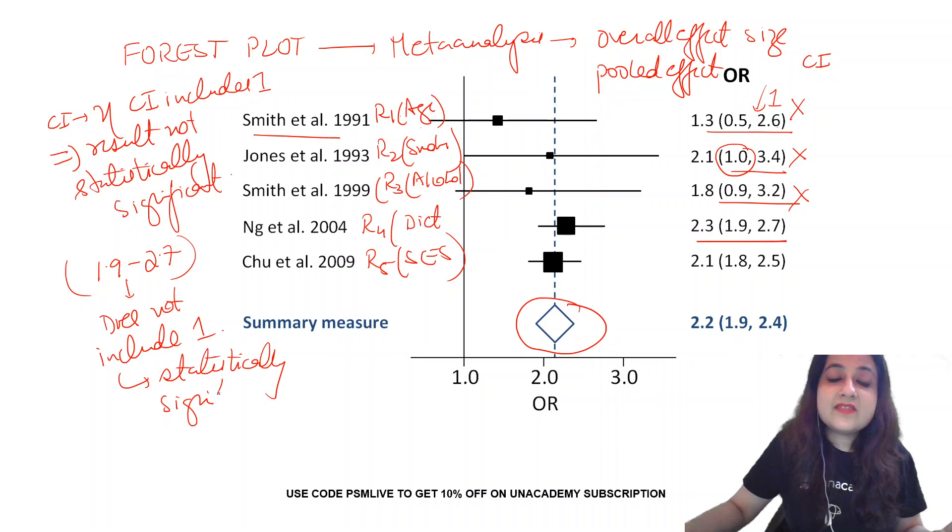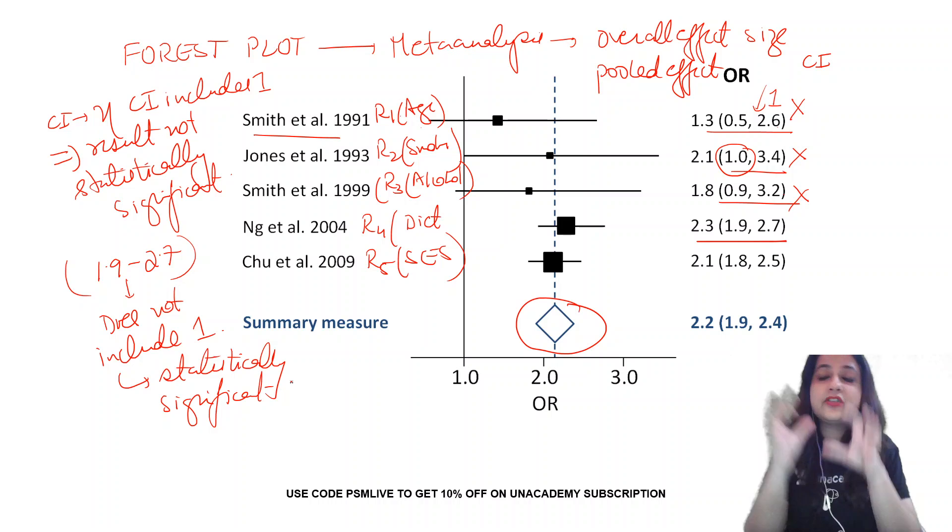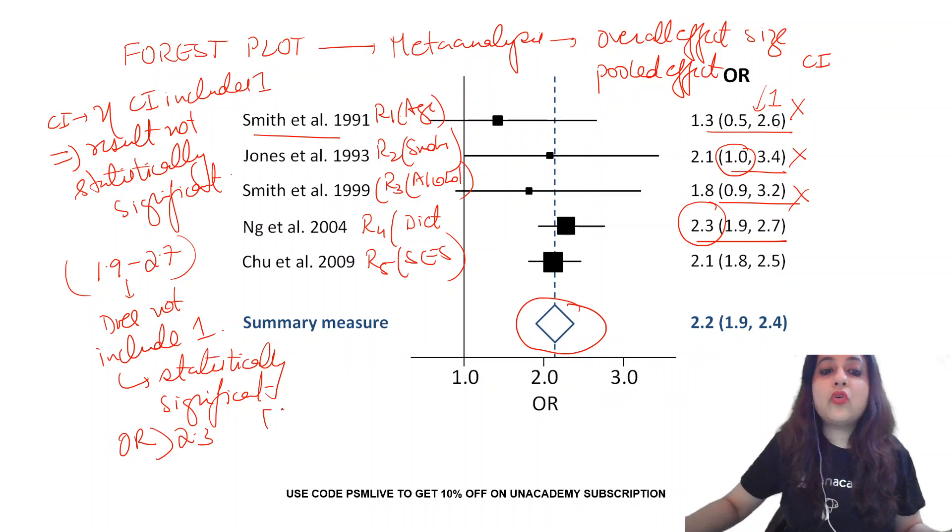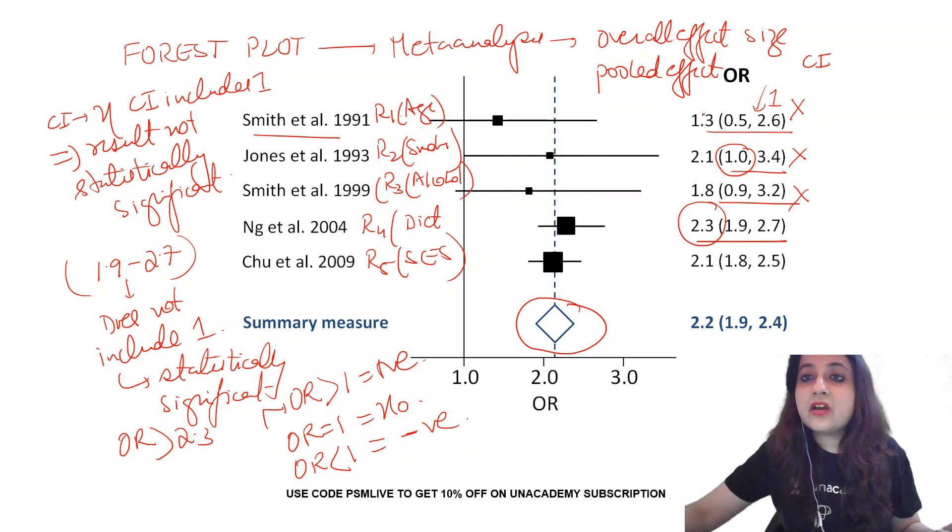Once you've concluded that it is statistically significant, you will look at the OR value. Or even if it was given RR value, the approach would be the same. Look at the OR value over here. It's more than 2.3. So OR when it is more than 1, it means positive association. OR equal to 1 means no association. And OR less than 1 means negative or inverse. So here it is more than 1. So that means this risk factor 4, which we have studied in Ng et al., is a risk factor.